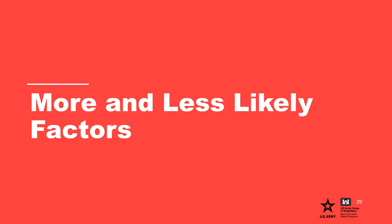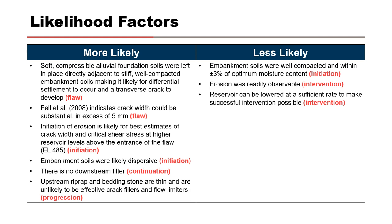When evaluating a potential failure mode, it is often helpful to think of more and less likely factors for each node. As shown by the tables on this slide, the more likely factors significantly outweigh the less likely factors. Soft, compressible alluvial foundation soils were left in place directly adjacent to stiff, well-compacted embankment soils, making it likely for differential settlement to occur and a transverse crack to develop. Felitol 2008 indicates crack widths could be substantial and in excess of five millimeters. Initiation of erosion is likely for best estimates of crack width and critical shear stress at higher reservoir levels, and the embankment soils were likely dispersive with no downstream filter.